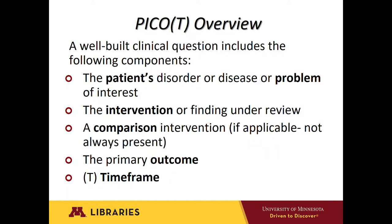A comparison intervention or control — not always present. What alternative intervention is considered, if any? For example, the question might be comparing the efficacy of two medications or the accuracy of two diagnostic tests. The clinical question does not have to always have a specific comparison. The outcome: what will the study try to accomplish or measure? What is the researcher trying to do for the patient or problem? Examples might include managing a disease, alleviating symptoms, preventing a disease, etc.